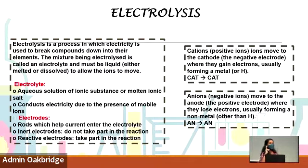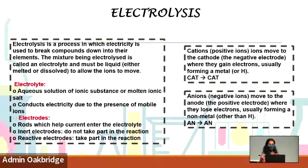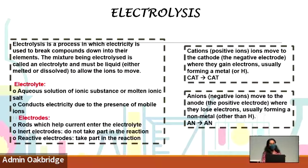We have two ions involved: cations and anions. Cations are positive ions - remember 'cat ion' means positive. Positive ions move to the cathode. Always remember: cat to cat - cation goes to cathode. Cation is a positive charged ion, cathode is a negative charged electrode, so your ion moves to the opposite charged electrode. An anion is a negative charged ion, and it moves to the positive charged electrode.